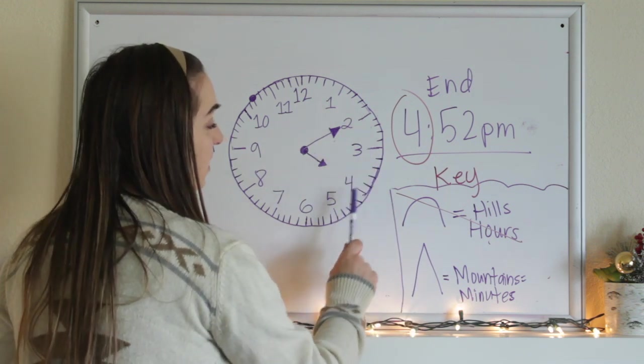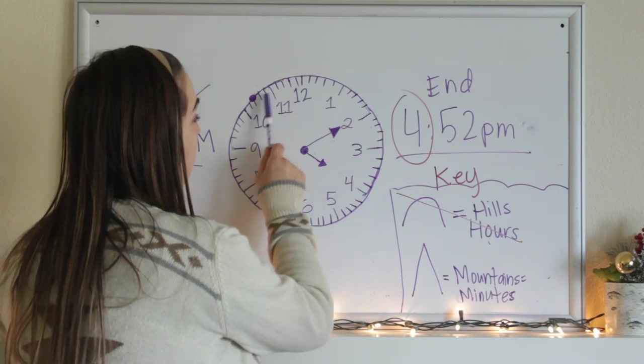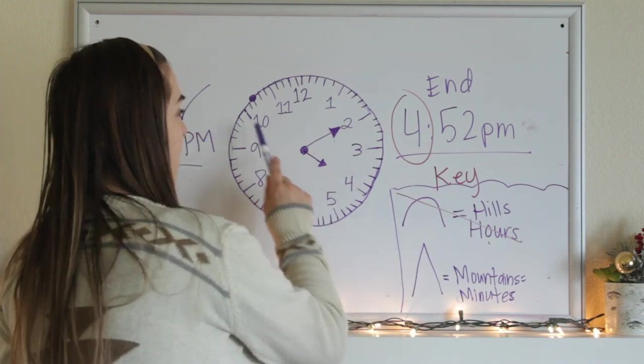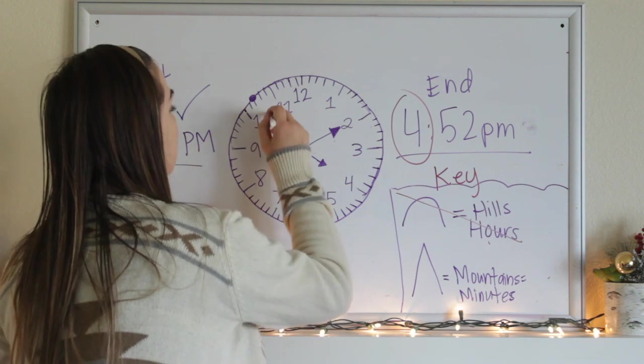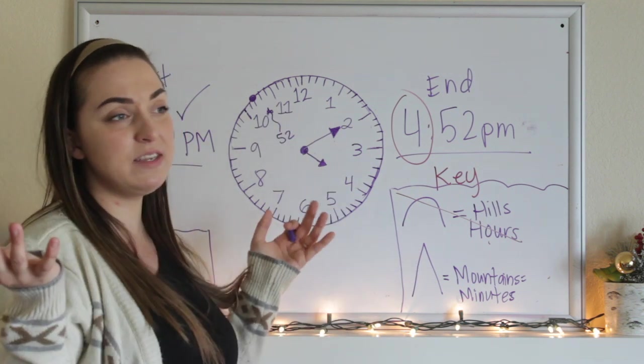5, 10, 15, 20, 25, 30, 35, 40, 45, 50, 55. Wait a second. I skipped 52. I said 50 and then I said 55 and I know that 52 is somewhere right in the middle. But how am I going to find that?